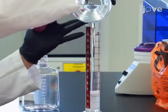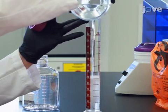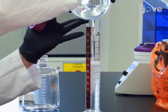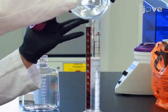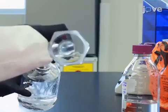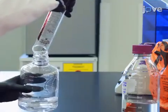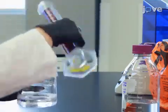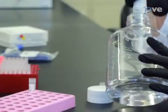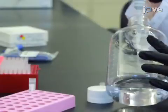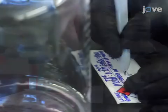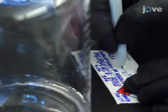On each extraction day, prepare a 7 to 3 ratio of methanol and 0.2 molar zinc sulfate in water to precipitate proteins and extract tacrolimus. The internal standard stock solution is spiked into the precipitation solution. Set the expiration of the solution at 12 hours.